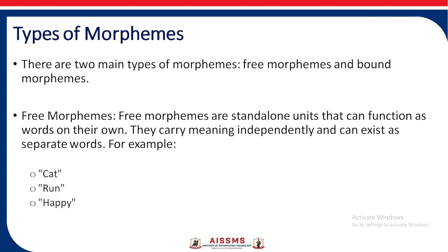There are two main types of morphemes: free morphemes and bound morphemes. Free morphemes are standalone units that can function as a word on their own. They carry meaning independently and can exist as a separate word. For example: cat, run, happy.